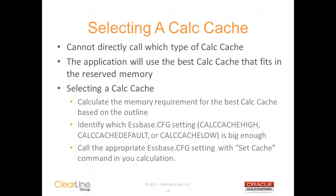The good news is that you can control what it selects by completing the following steps. First, you need to determine the memory requirement for the best calc cache based on your outline. Then you need to identify the calc cache setting in the configuration file — calc cache high, default, or low — that's big enough for it to be selected. Finally, you just call that setting from your calc script with the set cache command.